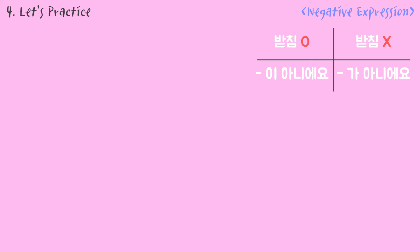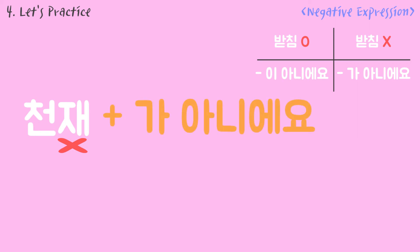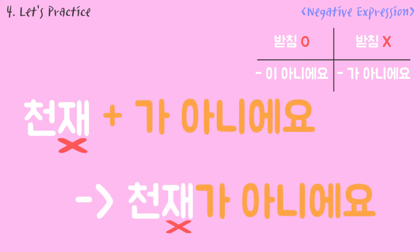If the noun is 천재, there is no 받침. It is 가 아니에요. So it becomes 천재가 아니에요.